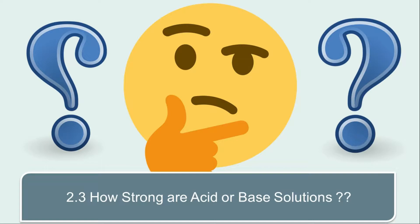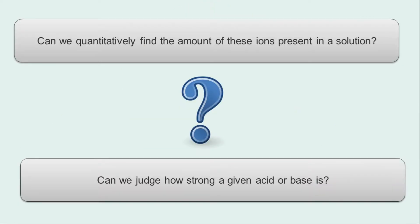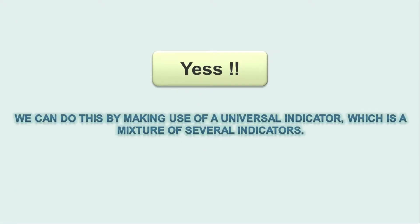We know how acid-base indicators can be used to distinguish between acids and bases. We have also learnt in the previous section about dilution and decrease in concentration of H+ or OH- ions in solution. The question arises: can we quantitatively find the amount of these ions present in the solution, or can we judge how strong a given acid or base is? The answer is yes — we can do this by making use of a universal indicator, which is a mixture of several indicators.